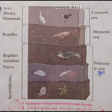Looking at this diagram, it seems that vertebrates have been slowly originated from invertebrates.